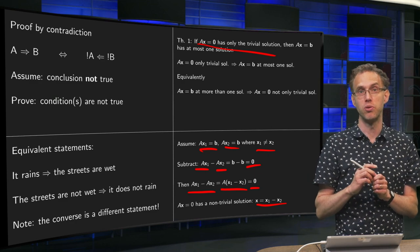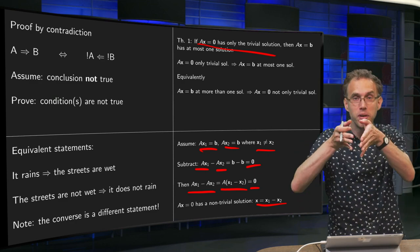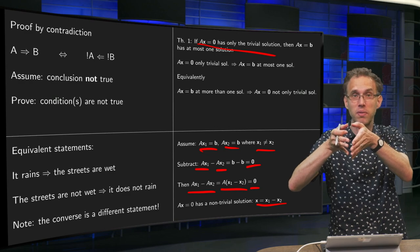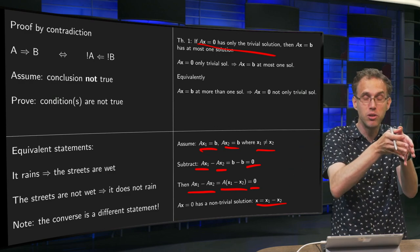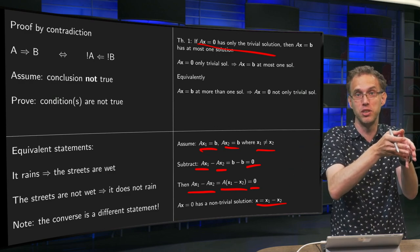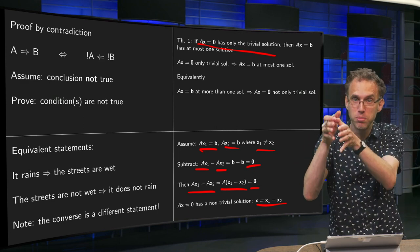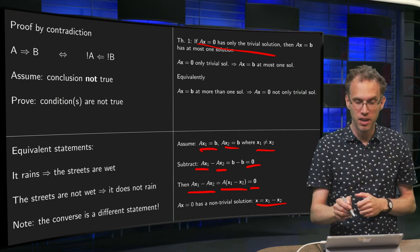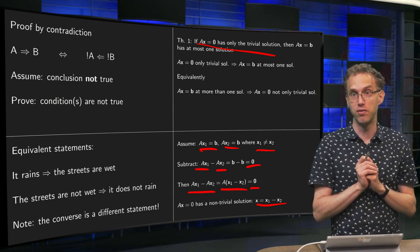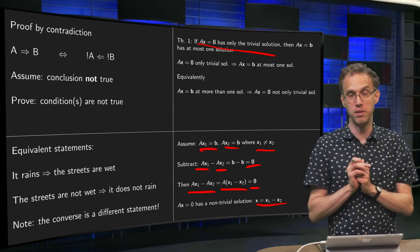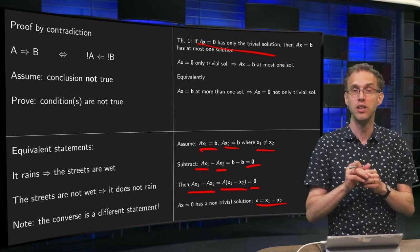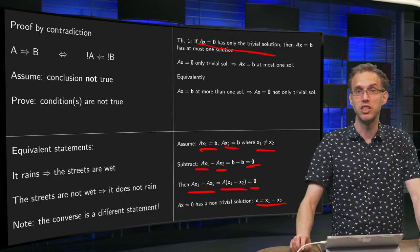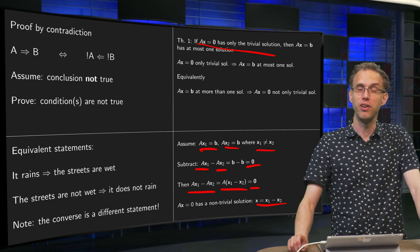So that means that your condition is not met, because it was given that Ax=0 has only a trivial solution. This leads to a contradiction — assuming that your conclusion is not true, you are contradicting your assumption. This means that your assumption is wrong. So if Ax=0 has only the trivial solution, then Ax=b has at most one solution. This is how you use a contradiction to prove a theorem.